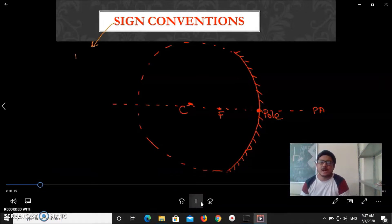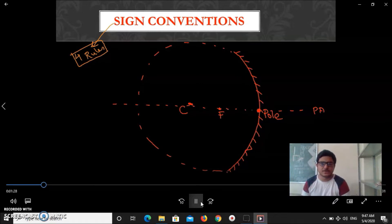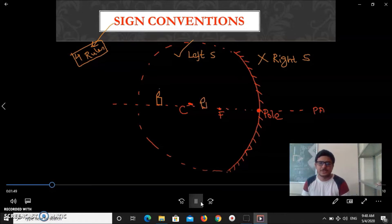Now let's try understanding of sign conventions. I already told you there are four rules. One by one we will discuss the rules. No doubt for this mirror, this is the right side and this is the left side. According to rule one, object have to be placed in the left side, not in right side. Object may be anywhere beyond C, between C and F, or anywhere, but it should not be in the right side.